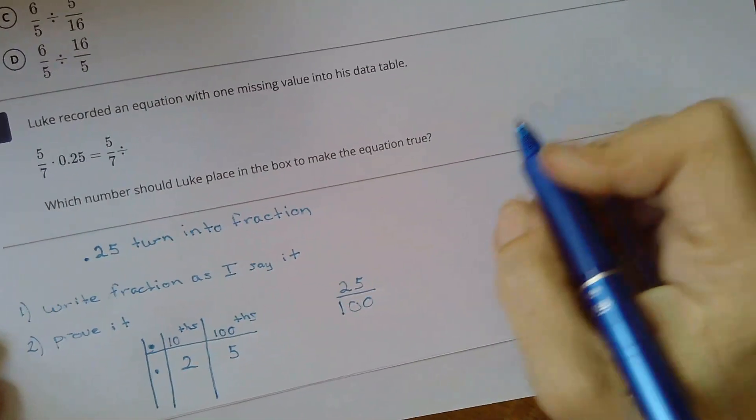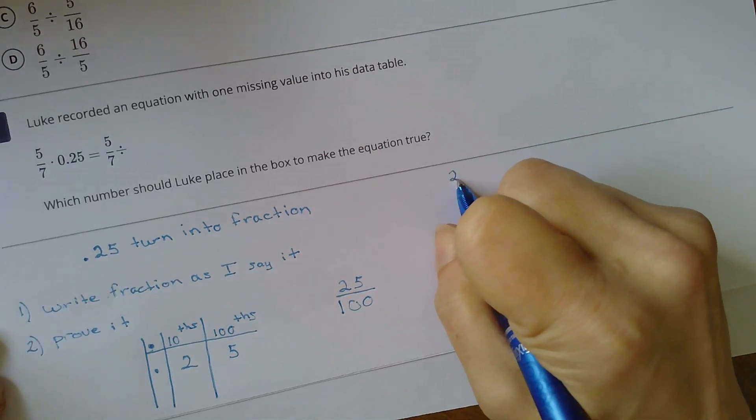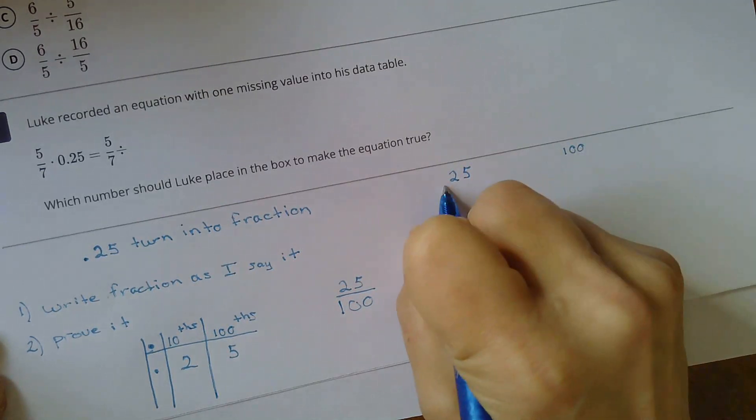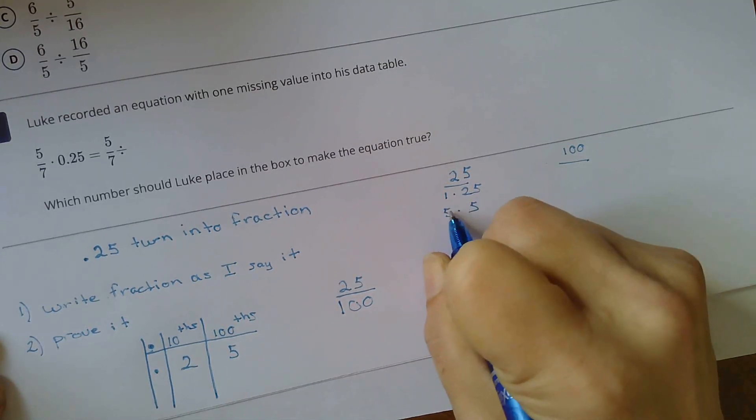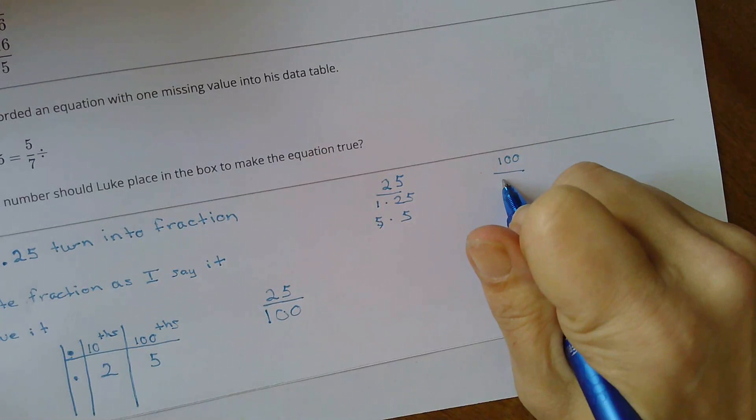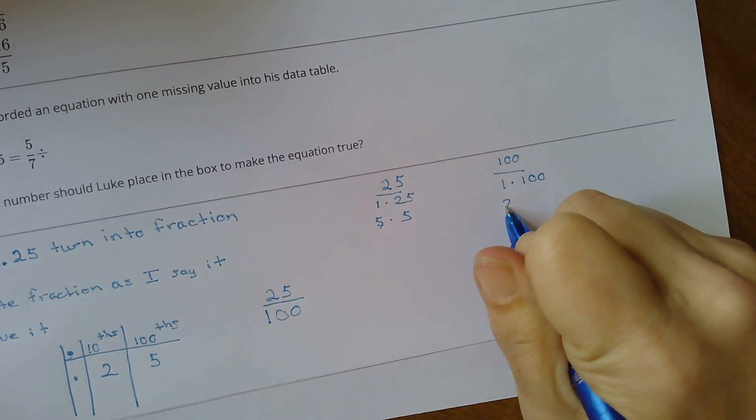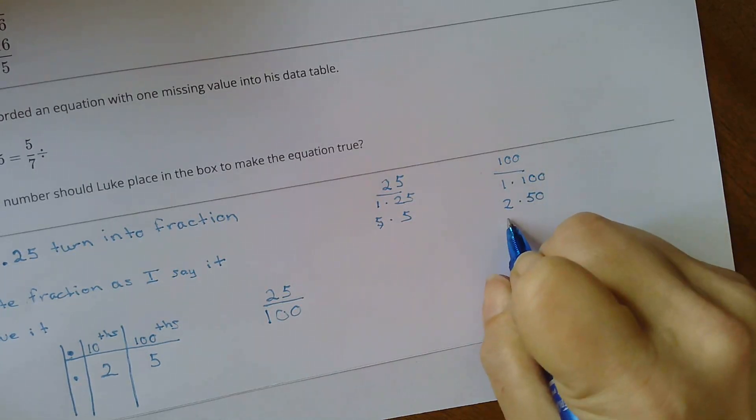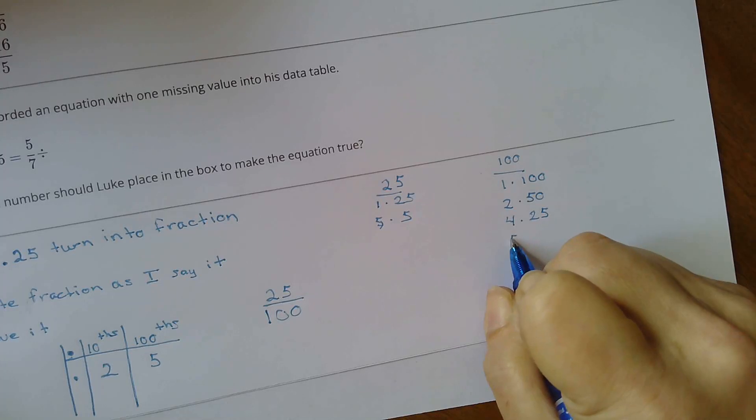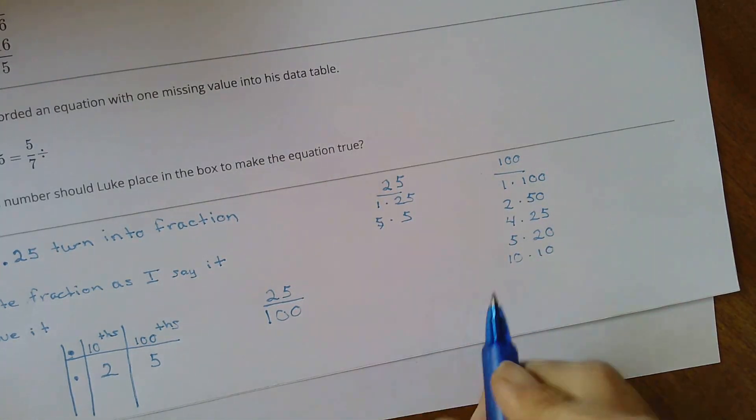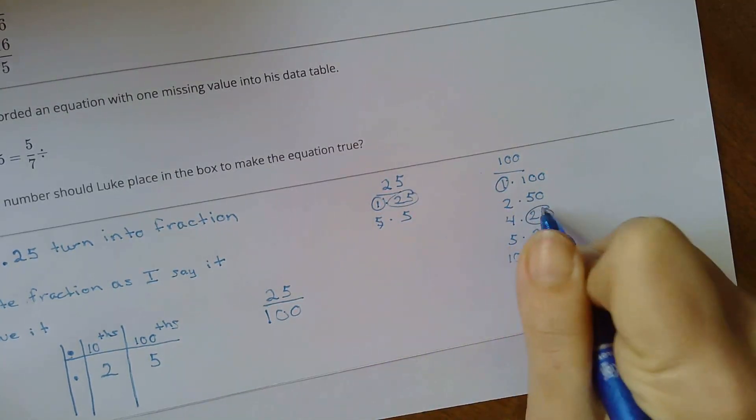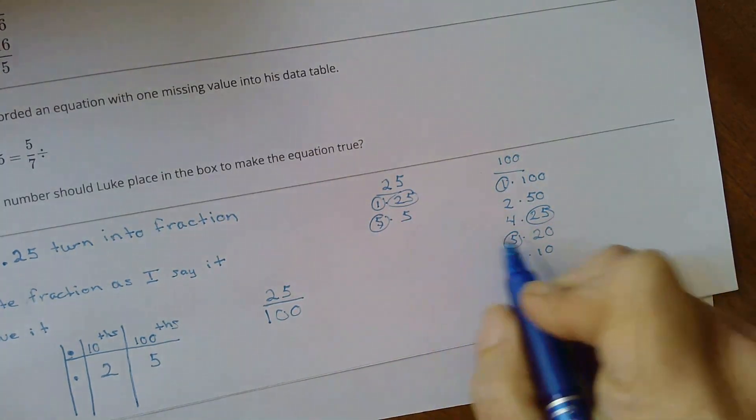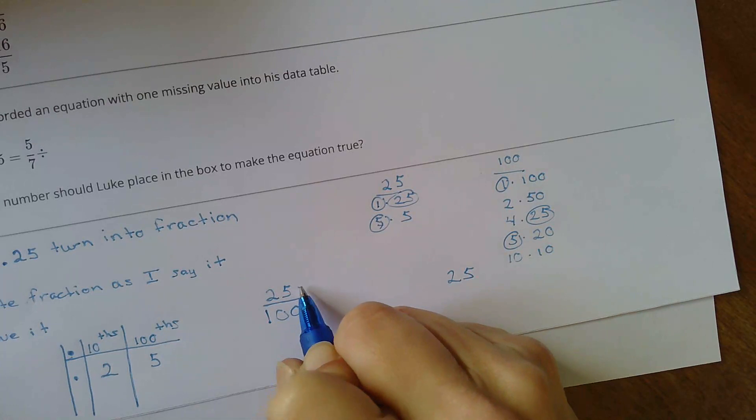I bet I can simplify that. So to prove it, I'm going to make my multiples. 1 times 25, 5 times 5. Go over here, 1 times 100, 2 times 50, 4 times 25, 5 times 20, 10 times 10. Now I'm going to find which one that goes into both sides. And the largest of the two is 25. That's what I'm going to divide by.